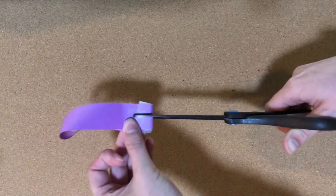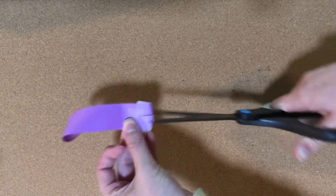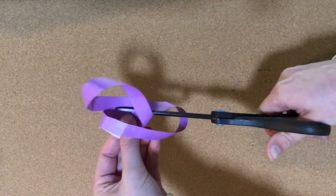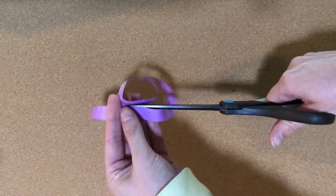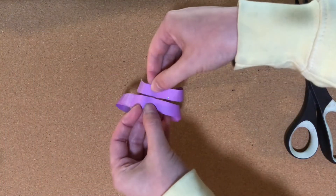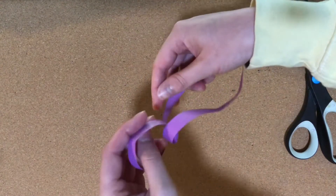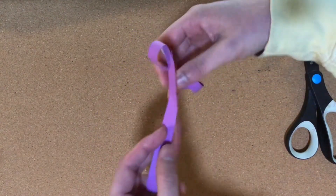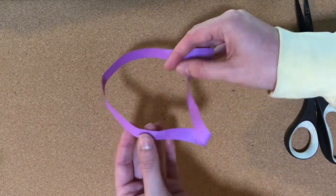First, make a little cut right in the middle of the circle like this, and then continue all the way around so that you're cutting the circle right in half. Now before you pull it apart, make a guess about what you think will happen. Okay, now pull it apart. What happened? So it didn't split into two separate circles like you might expect — it actually made one bigger circle with two twists in it. That's kind of interesting.